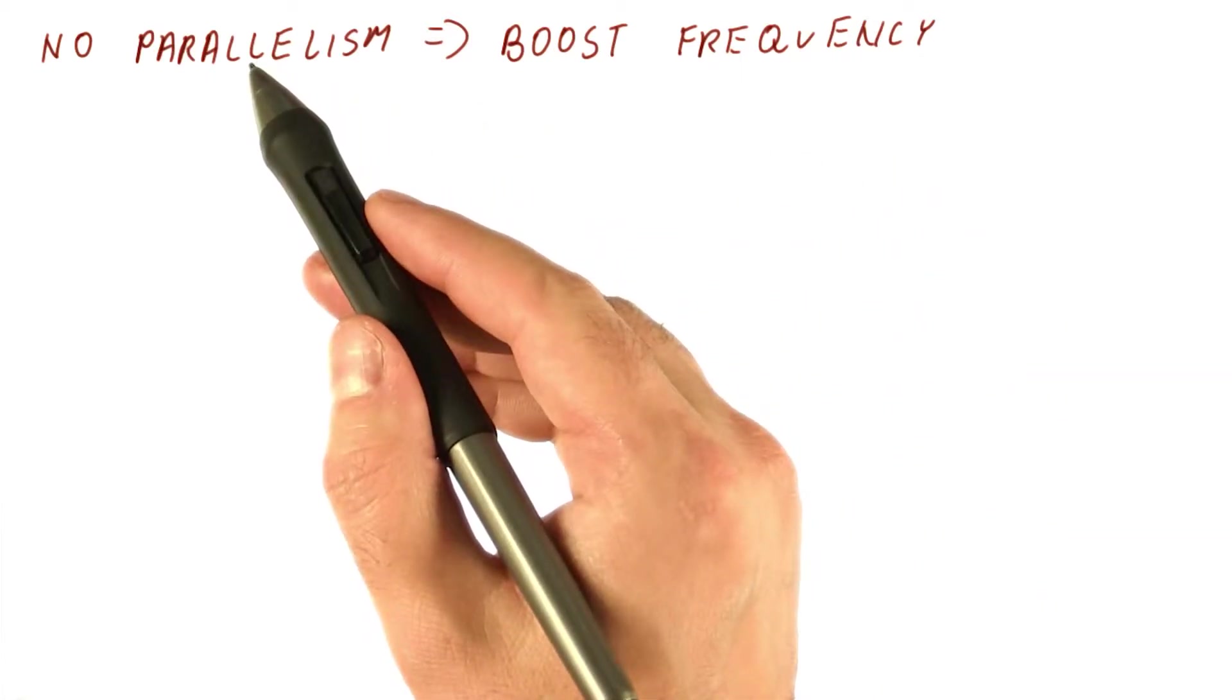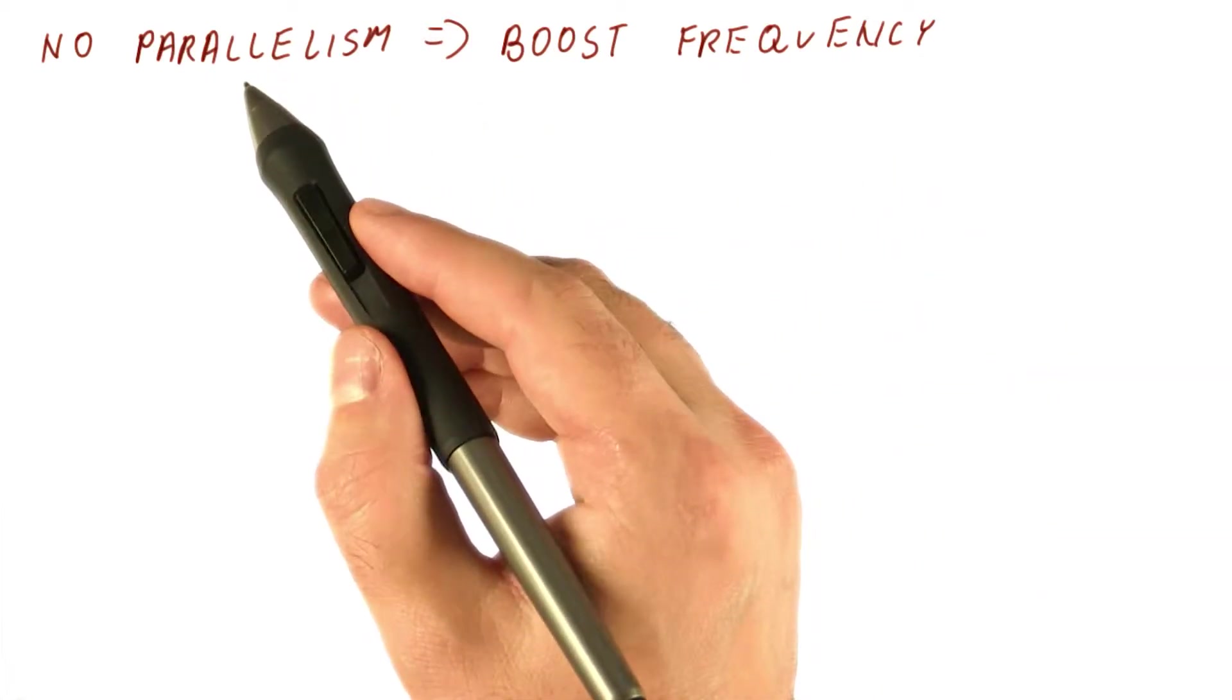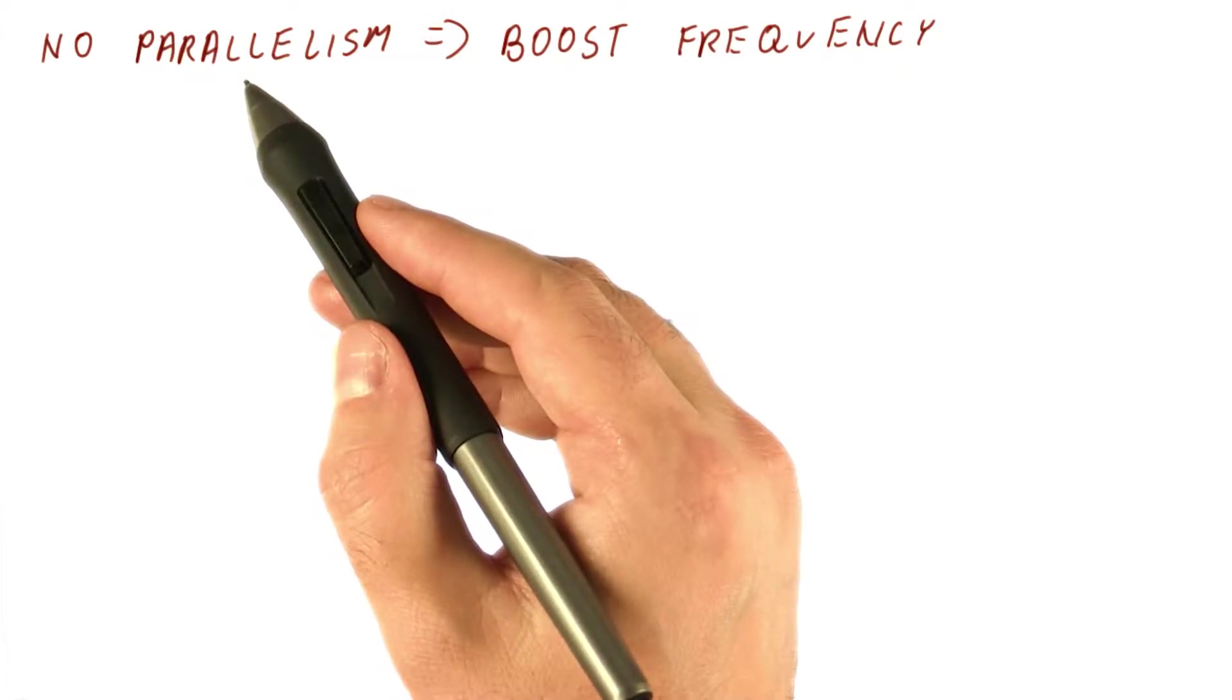So the quiz we just did shows that adding more cores might result in a slowdown if we have to stay within the same power budget.